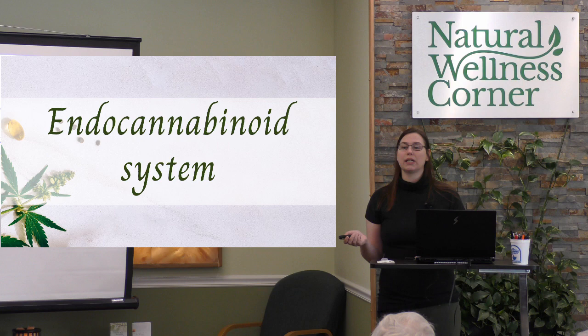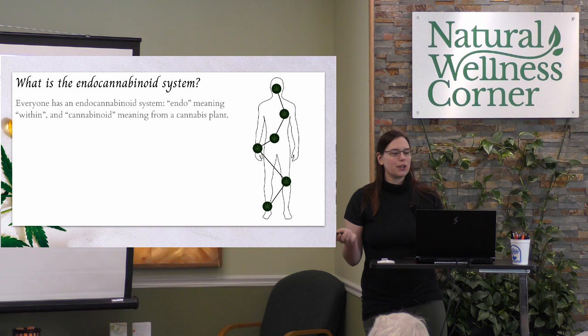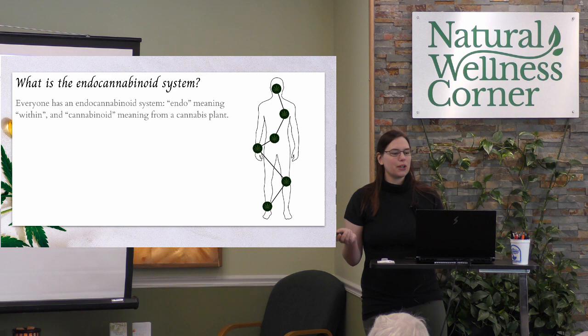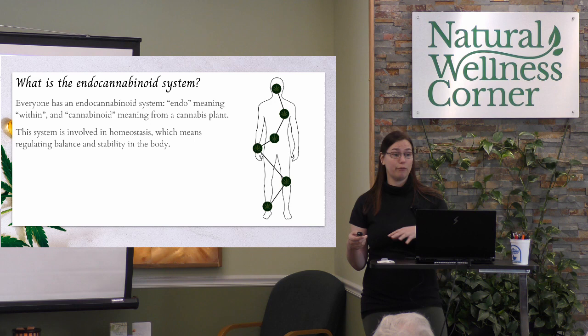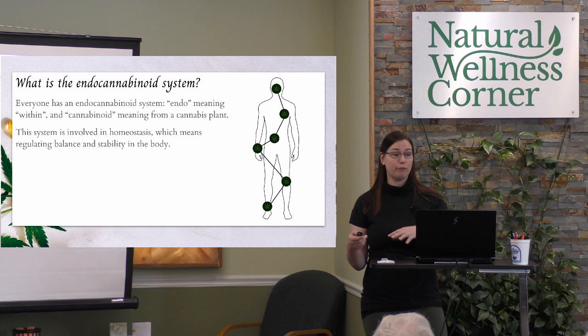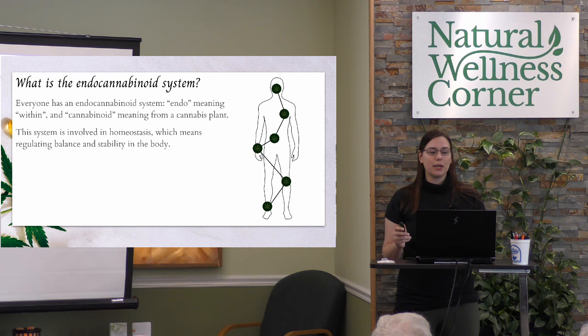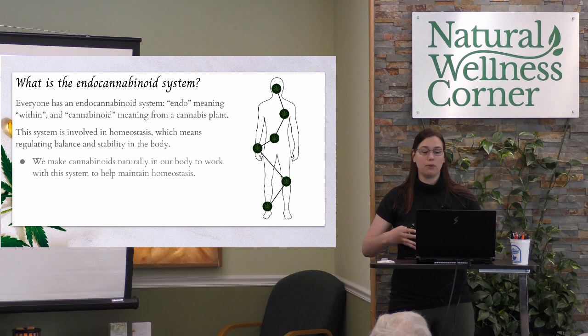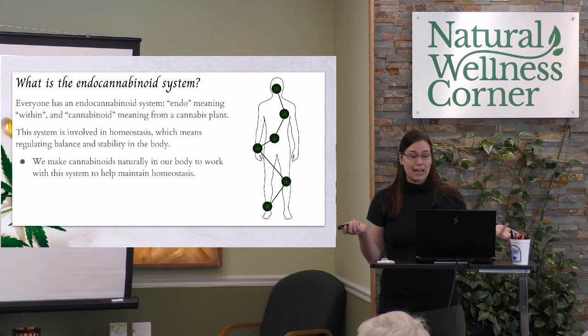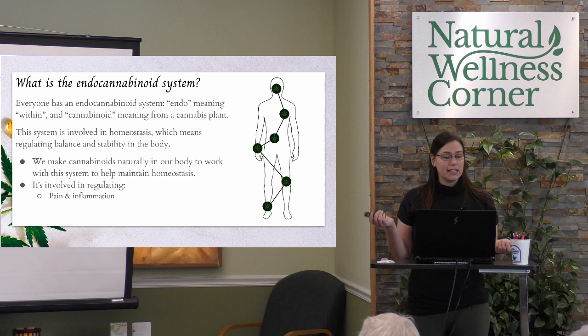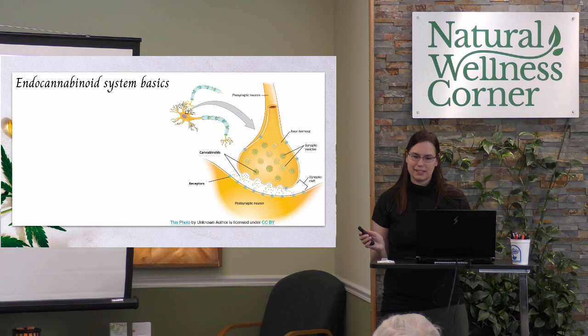The first thing we'll go over is what exactly is the endocannabinoid system. Everyone has one. 'Endo' just means within us, and 'cannabinoid' means derived from the cannabis plant — hemp or marijuana — but we make these compounds within ourselves as well. This system is very important in maintaining homeostasis for your body, keeping your various body systems in balance. It regulates things like pain, inflammation, sleep, mood, and much more.